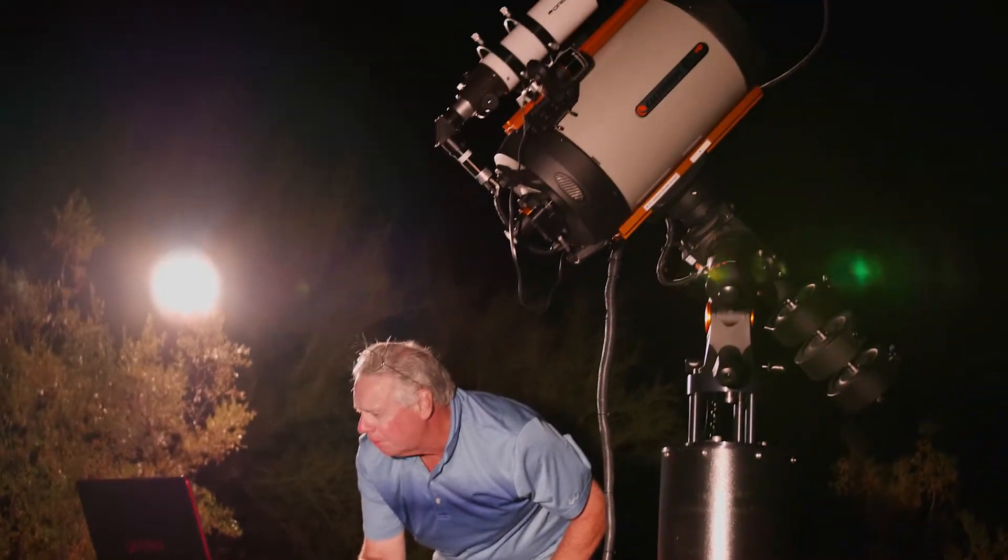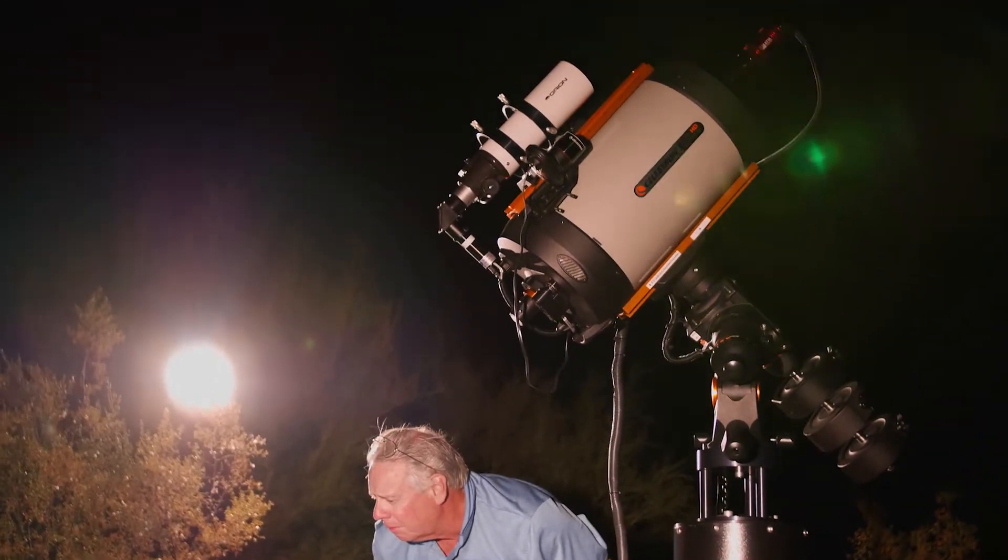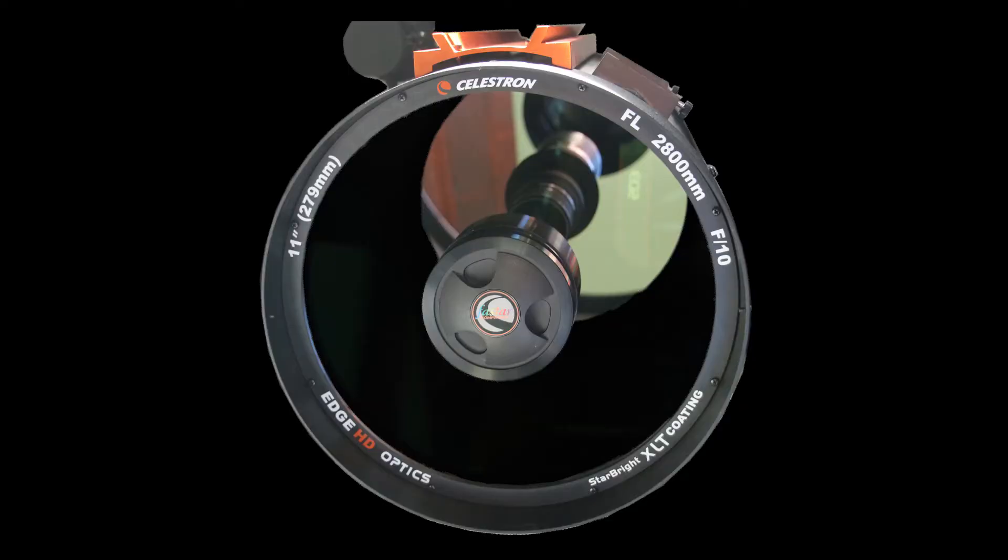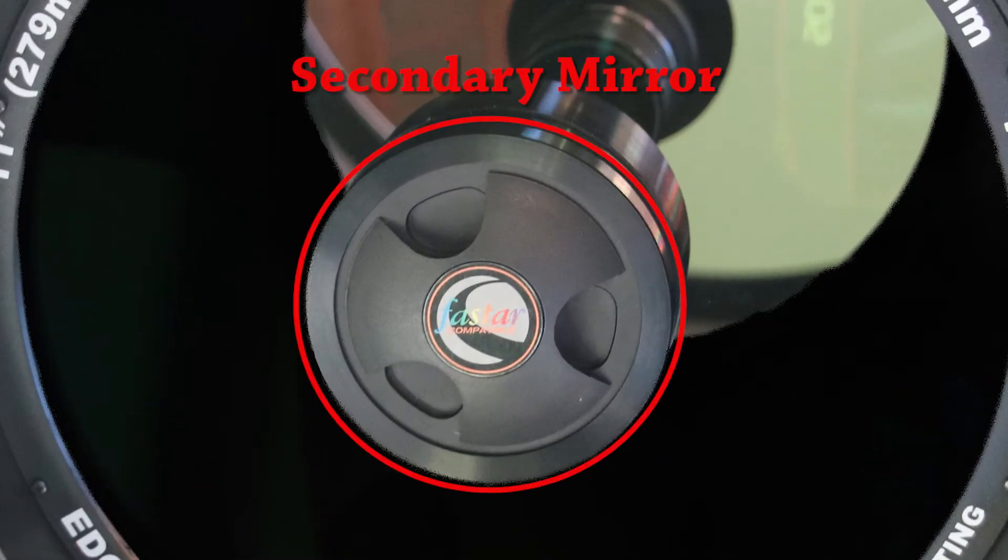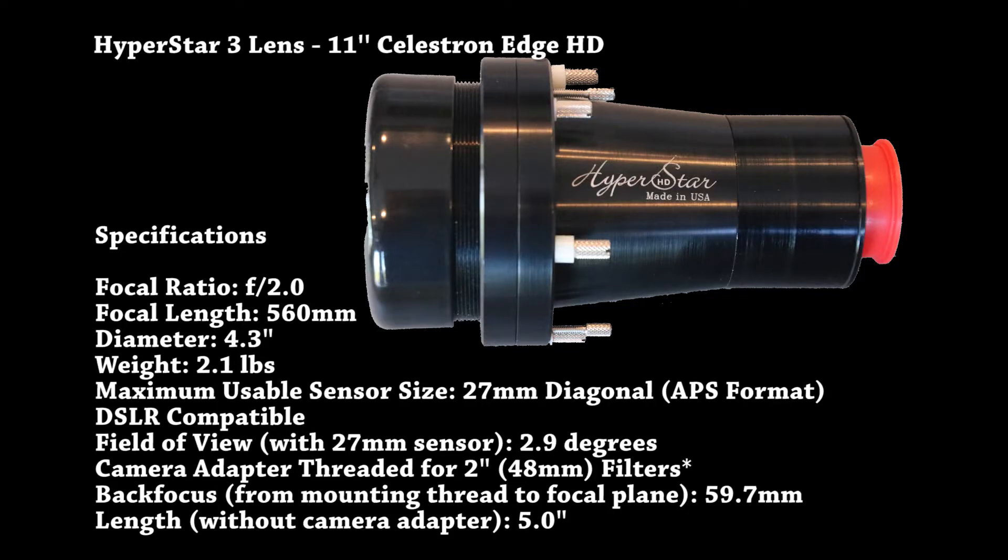The telescope is set up on its mount with a Hyperstar lens and the main CCD camera. Hyperstar uses Celestron's Faststar feature that allows the secondary mirror to be removed from the Celestron Schmidt-Cassegrain telescope and replaced by the Hyperstar lens.